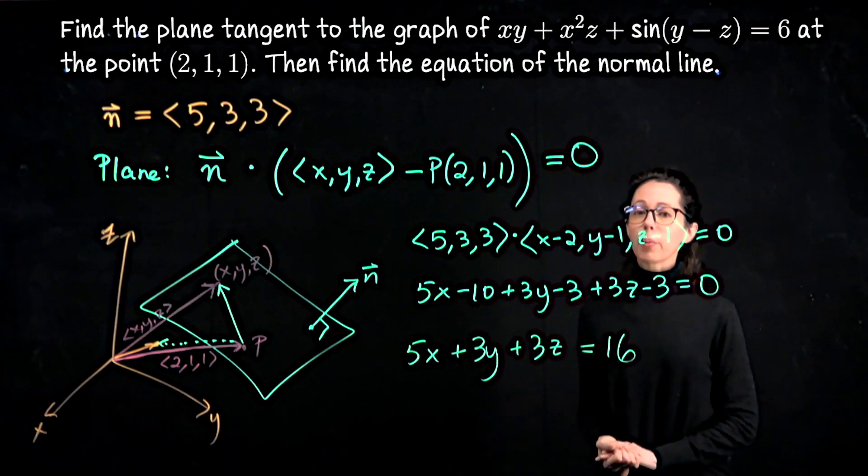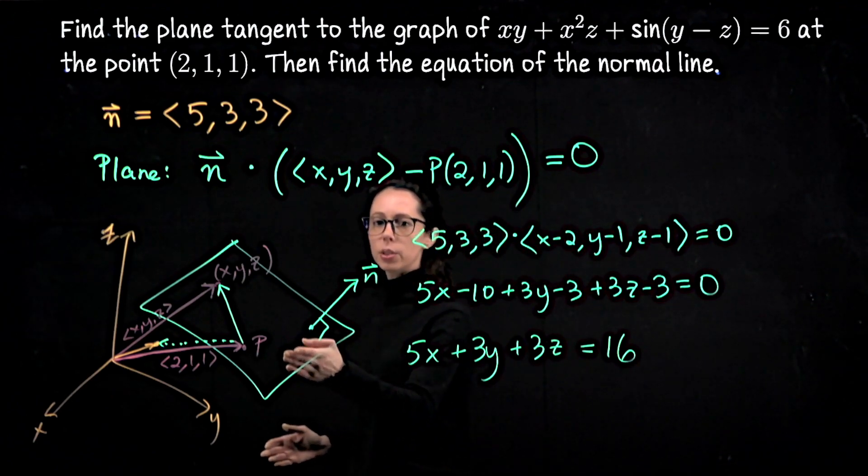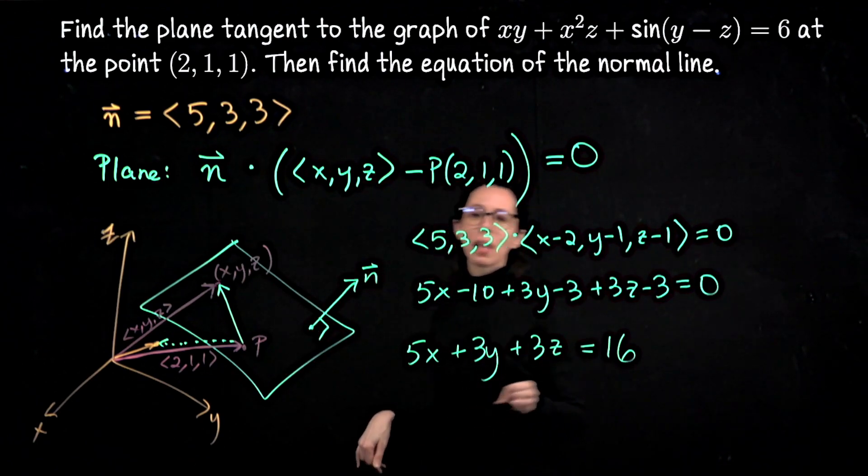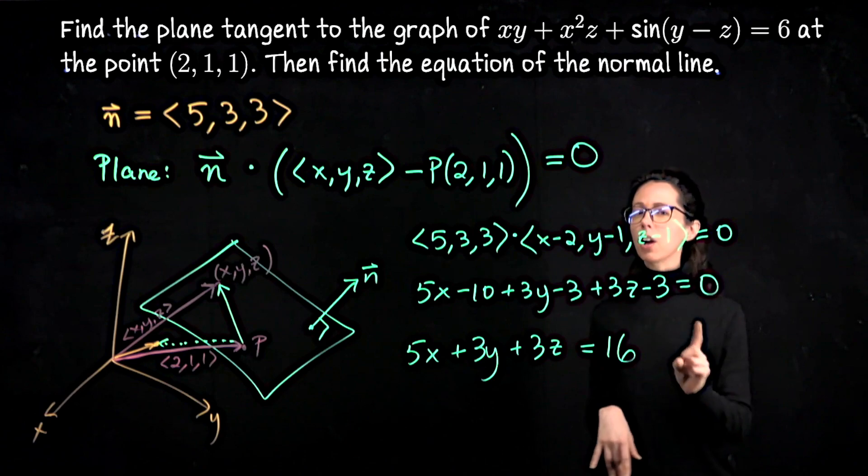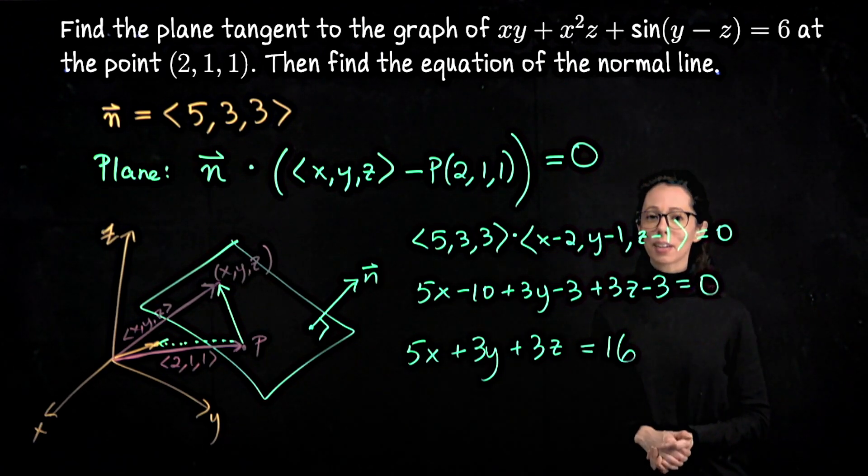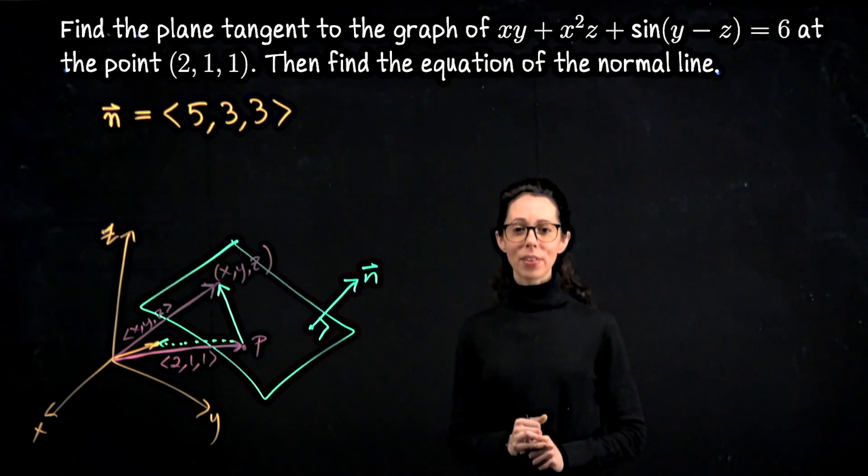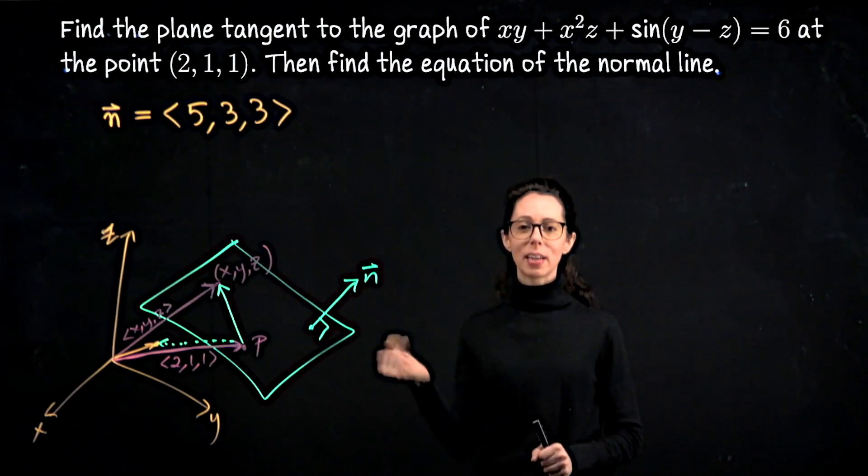This is the equation of the plane that we were looking for, but we also want to find the line perpendicular to this plane passing through the point P. Let me give you a moment to pause, write this down, and also see if you can go ahead and solve that problem. I'll come back and show you how to do it in case you got stuck.